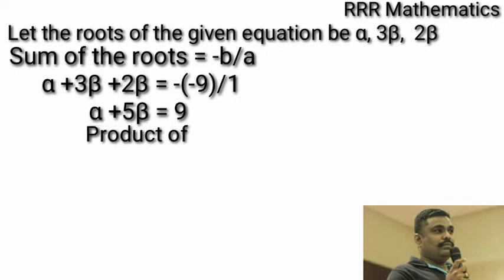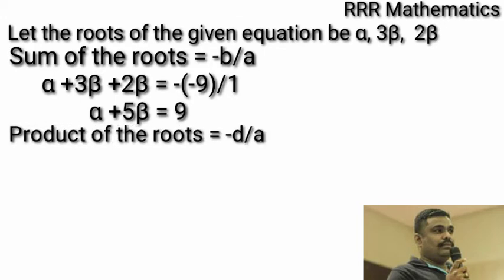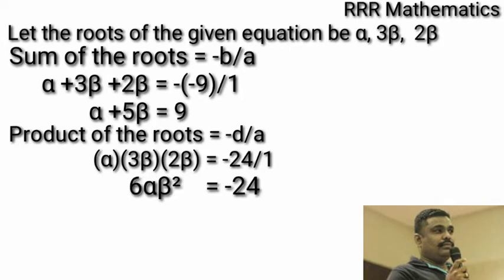Product of the roots minus d by a. That is, alpha into 3 beta into 2 beta which is equal to minus 24 by 1. That is, 6 alpha into beta square. Therefore, 6 alpha beta square which is equal to minus 24. When you divide by 6, alpha beta square equal to minus 4.